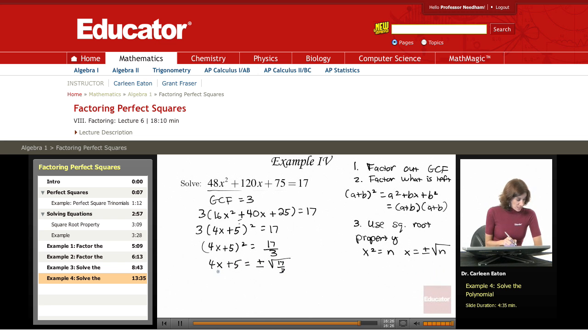Now I need to solve for x. First, I'm going to subtract 5 from both sides. So that's going to give me negative 5 plus or minus the square root of 17 over 3. My final step is to divide both sides by 4.